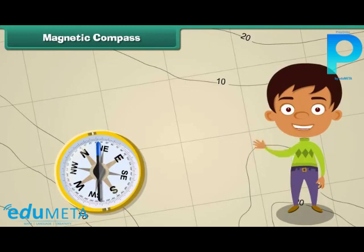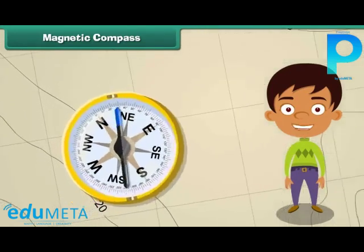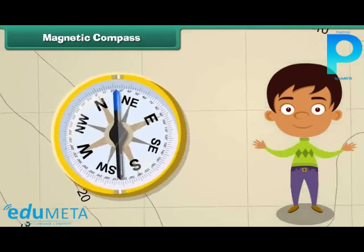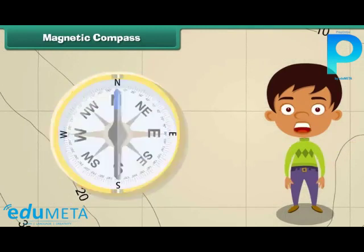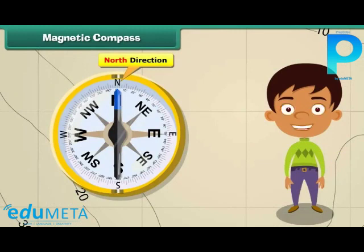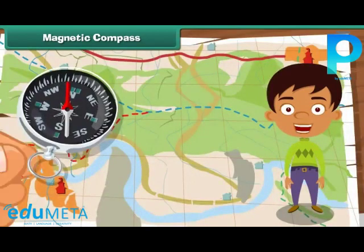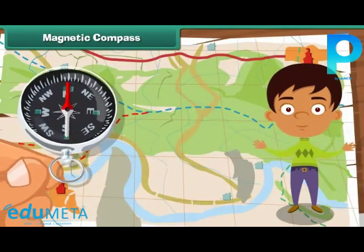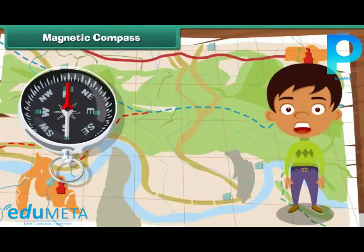A magnetic compass is a simple device which helps us to locate a place. It has a long needle. One end of the needle is marked N to represent the North direction. No matter where you are on Earth's surface, the needle of the magnetic compass will always point to the North direction. Thus, one can find all other directions in relation to North.